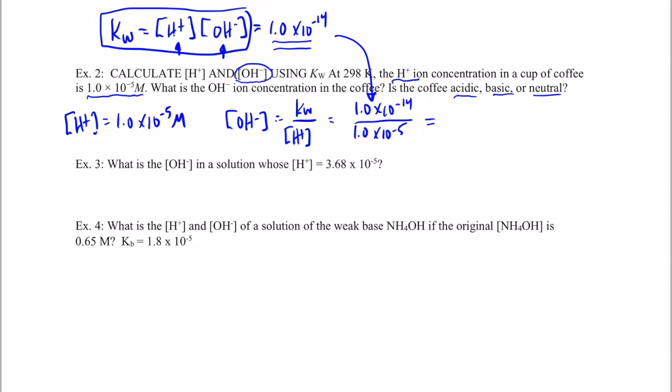We should be able to do this without a calculator. We have 10 to the negative 14th divided by 10 to the negative 5th. When you divide numbers expressed in scientific form, the powers of 10 are subtracted from each other. So we have negative 14 minus negative 5, and that gives us 10 to the negative 9th. We end up with 1.0 times 10 to the negative 9th moles per liter of hydroxide ions.